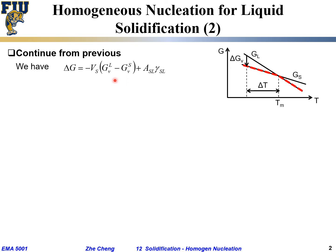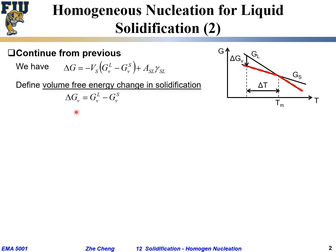We define the volume free energy change in solidification as delta Gv equals GVL minus GVS. If we are below the melting point, Gl is higher than Gs, so delta Gv — liquid minus solid — is a positive number. That's how we define delta Gv: it is always positive when we are below the melting point.